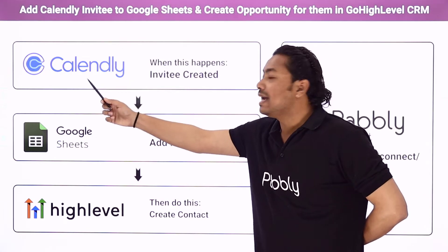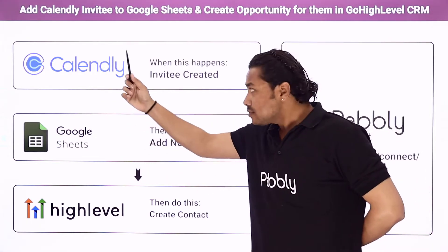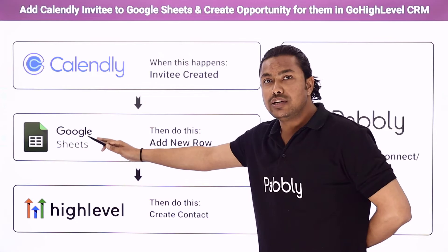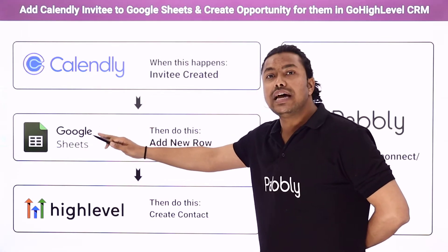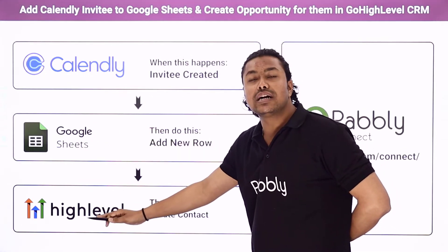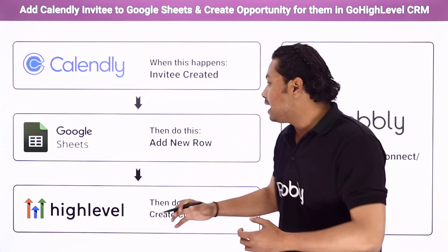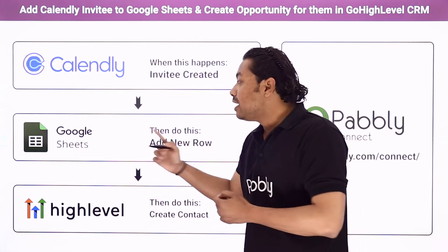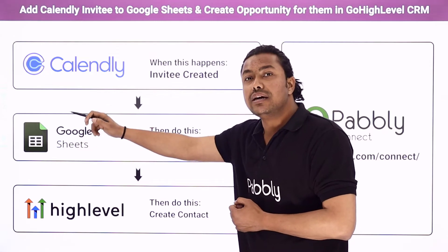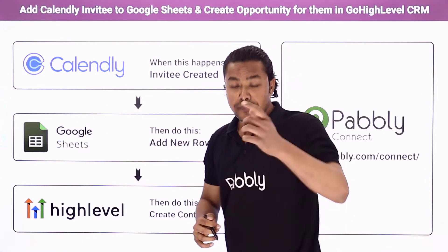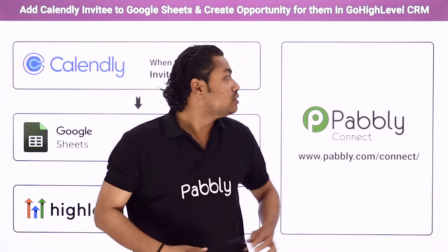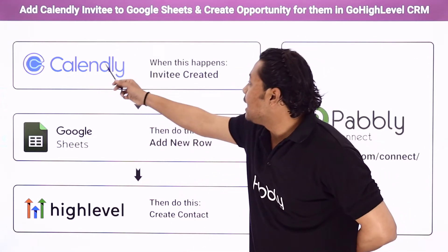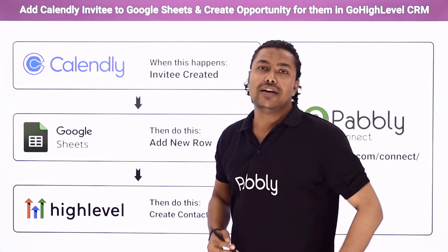Here is what we are going to do: first we will make an invitee in Calendly, then the details of that invitee will be added as a new row in Google Sheets, and after that the details will go to Go High Level CRM where a new contact will be created. To do this automation we are going to use Pabbly Connect, which will help us connect Calendly, Google Sheets, and Go High Level together.